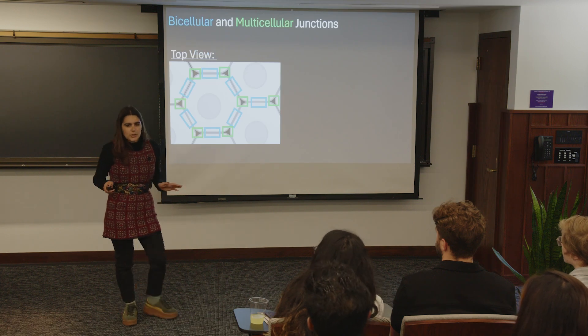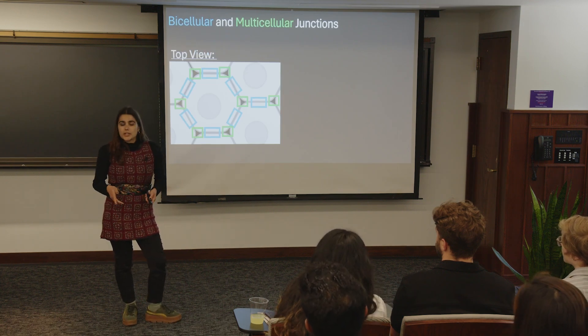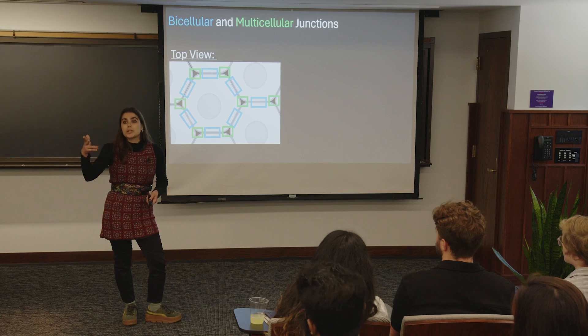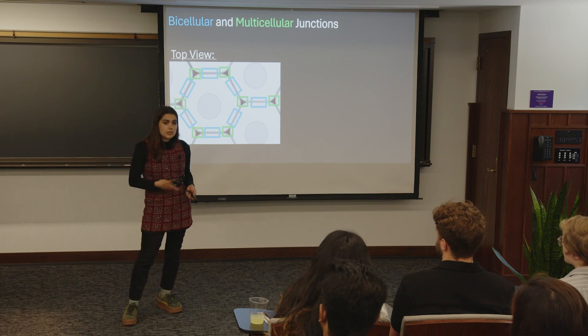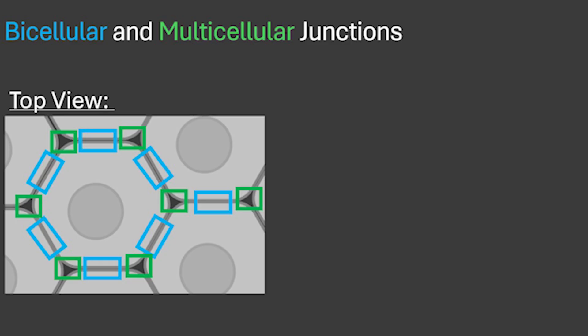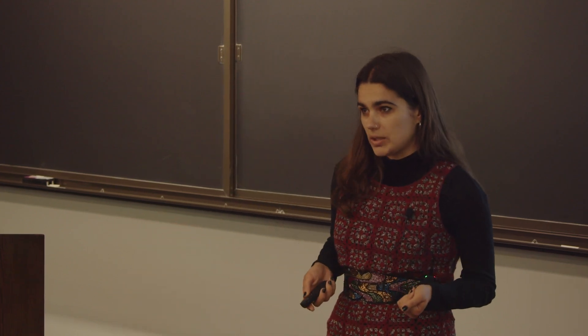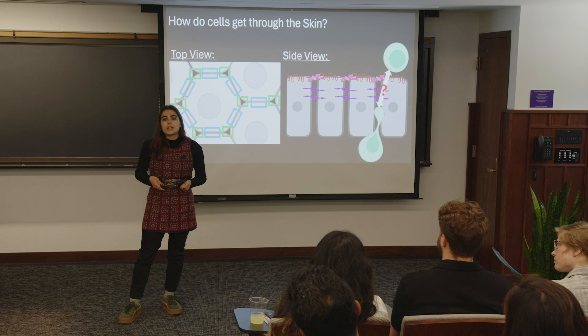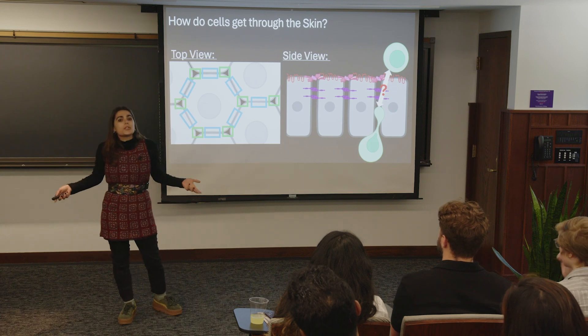I want to talk through some terminology. If we were looking at the skin, the borders between two skin cells are called bicellular junctions — those are outlined in blue behind me. And then multicellular junctions are outlined in green, and I'm highlighting those because that's where cells are known to be able to move through the skin. The skin cells are lined with junctional proteins that are holding them together, so the question becomes how are these cells moving through these junctional proteins?